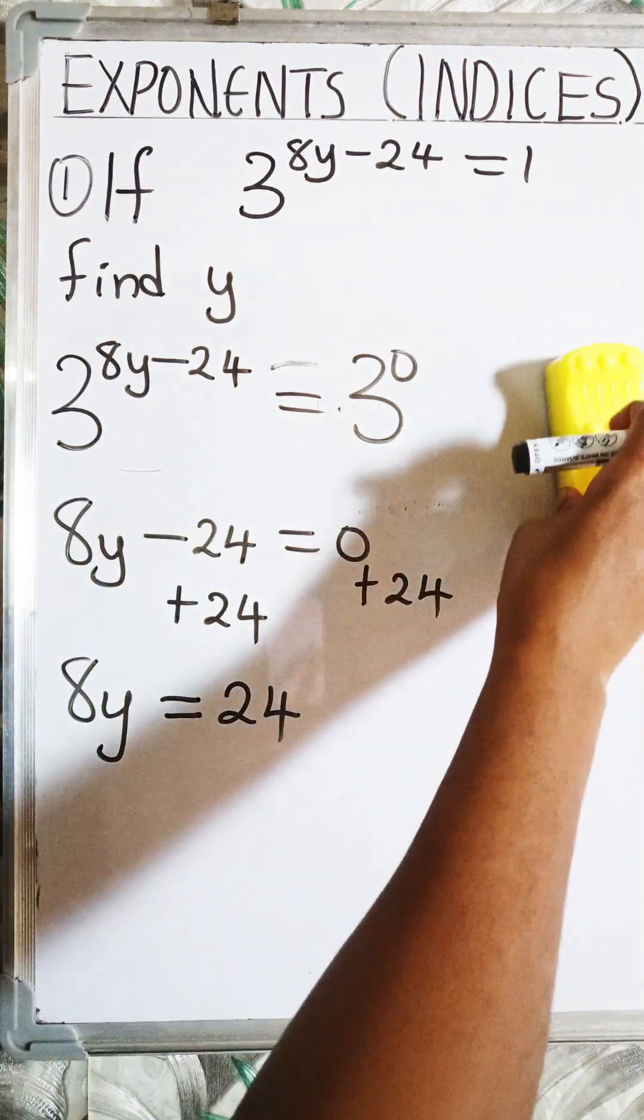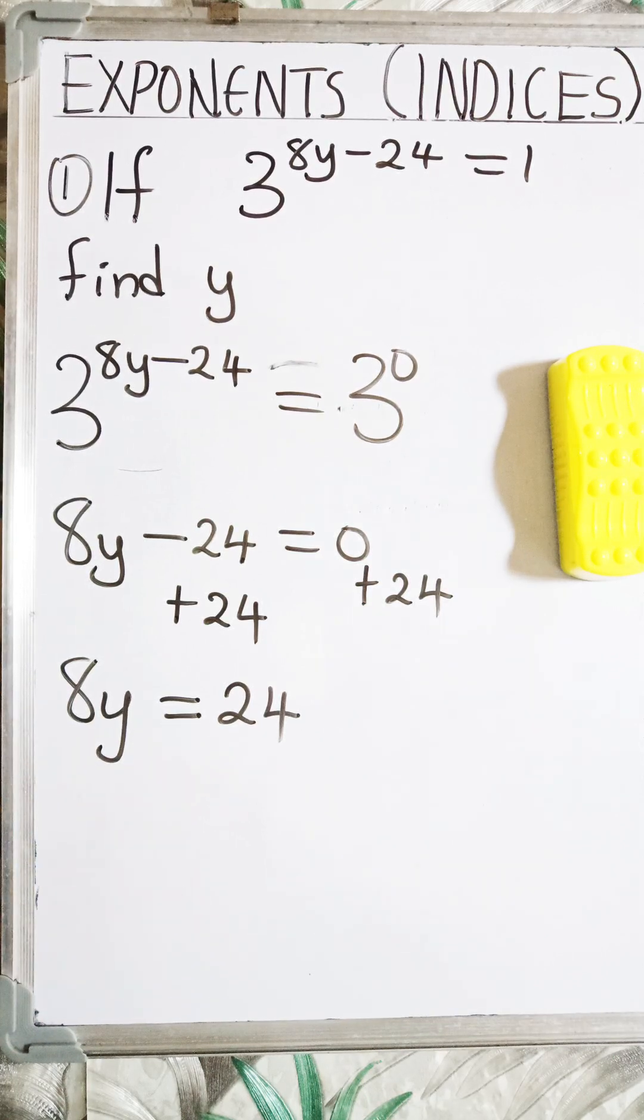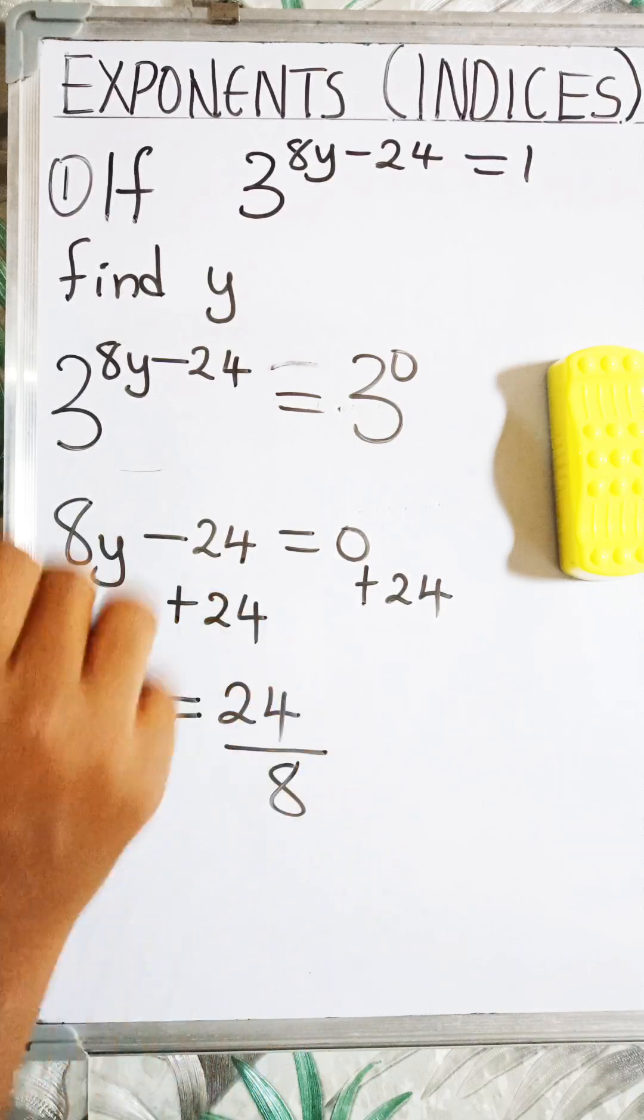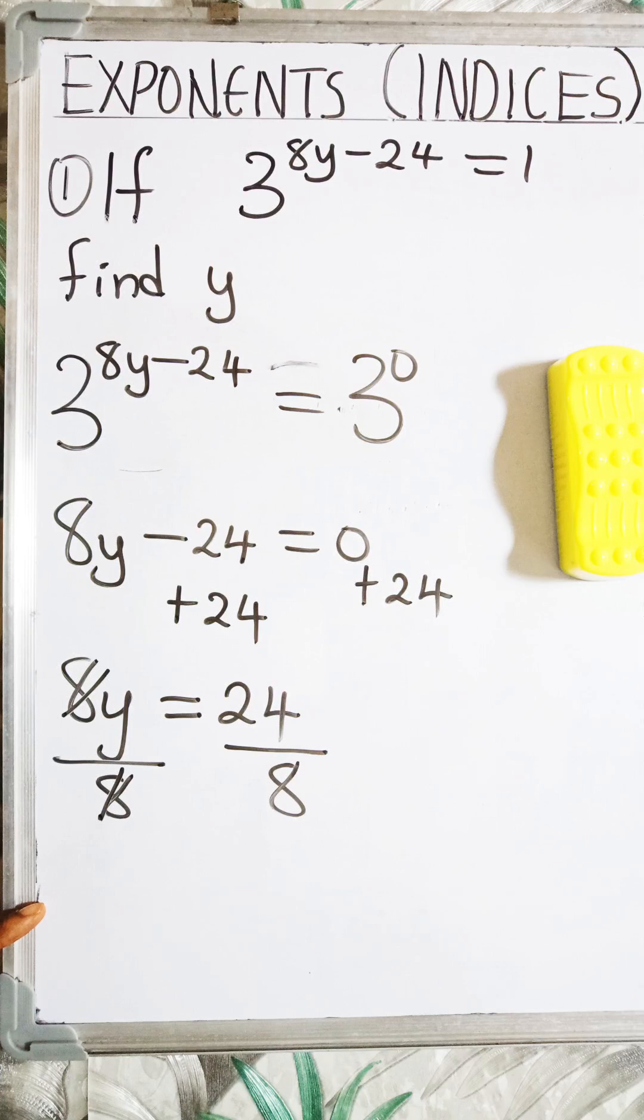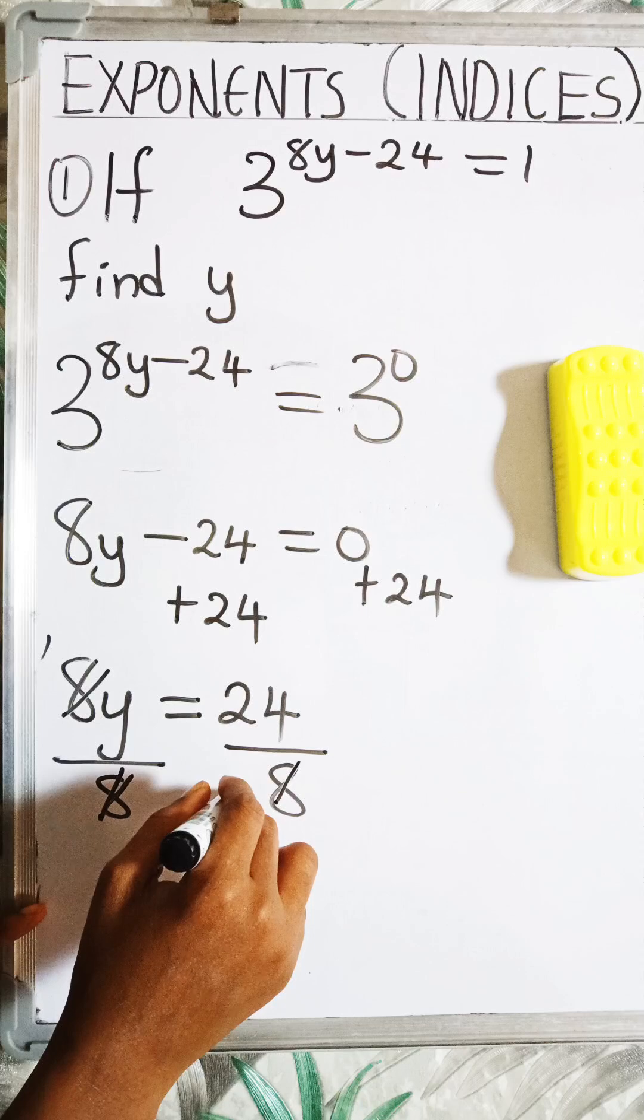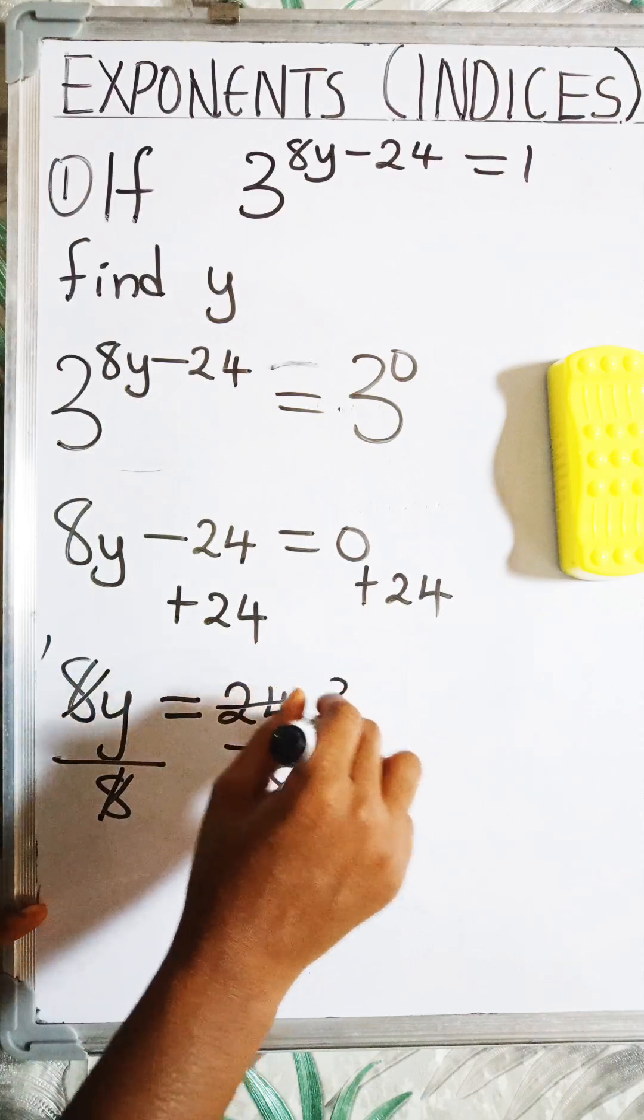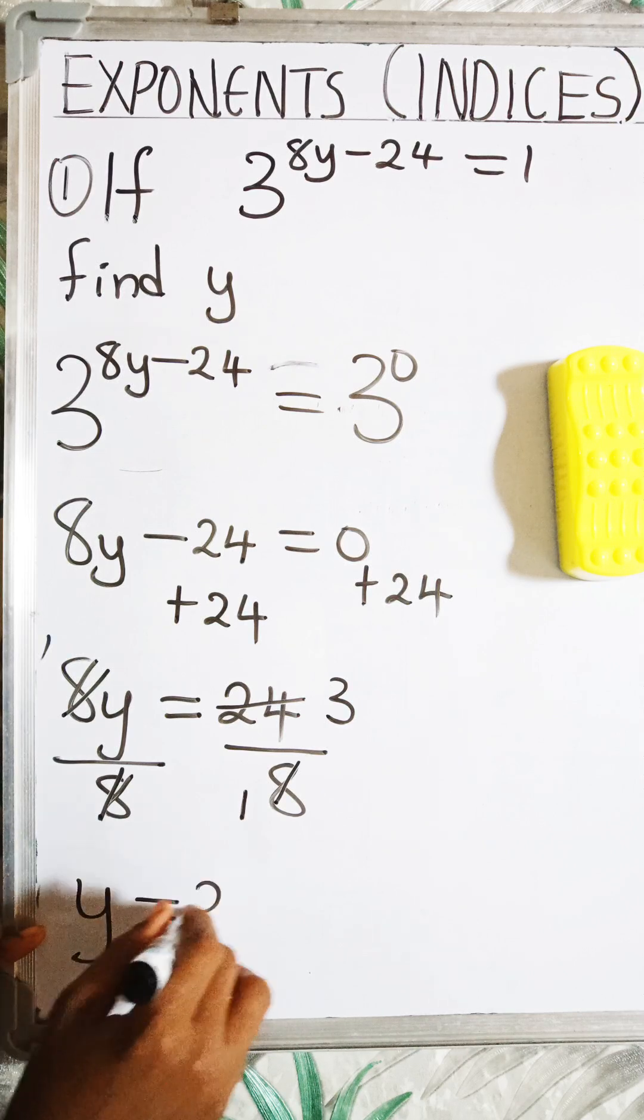What is the next thing to do? The next thing to do is to divide both sides of the equation by the coefficient of y. The coefficient of y here is 8. So I'm going to divide this side by 8 and divide here by 8. So 8 divided by 8 is 1. Okay, and then 8 will go into itself once and we're going to go into 24, 3 times. So my y is now equal to 3.